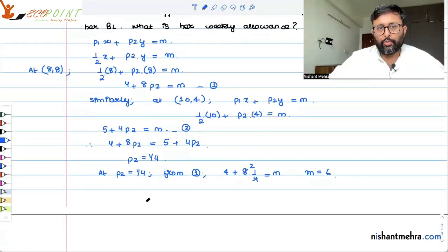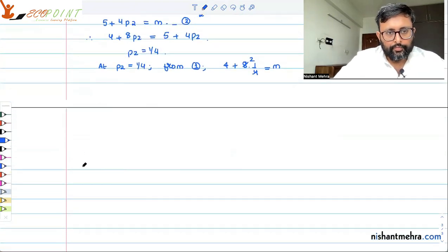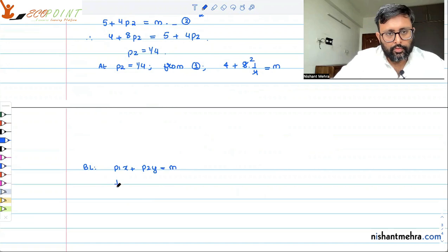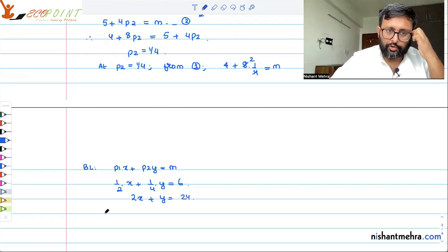Your M is equal to 6. So your budget allowance is equal to 6. You have now the prices with you, you have income with you. It is very easy for you to just draw the budget line. So your budget line is going to be P1X plus P2Y equals to M. So P1 is 1/2, P2 is 1/4, M is 6. Once you solve this, this will come out to be 2X plus Y equals to 24.